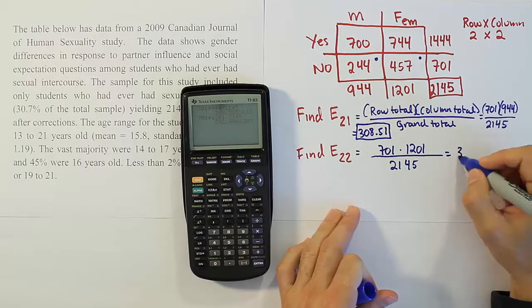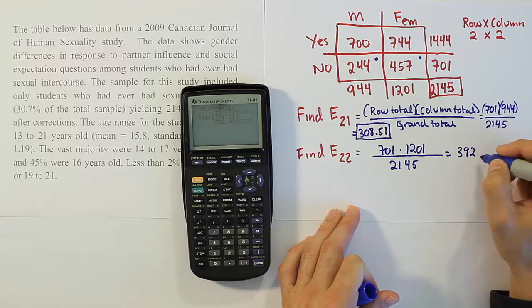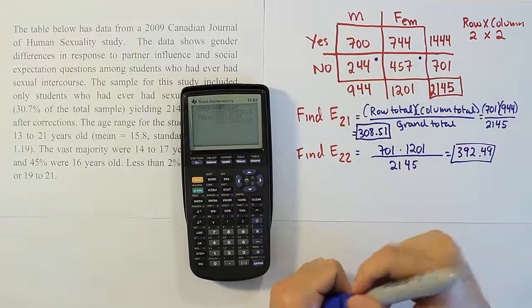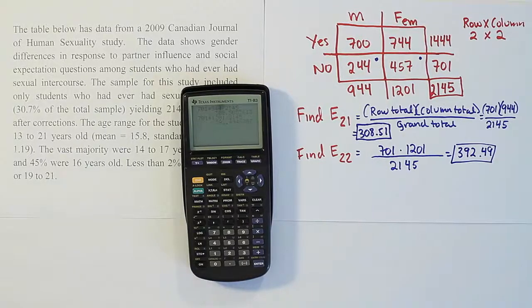When we're done, we get 392.49. So that's it. Those are our two expectations.